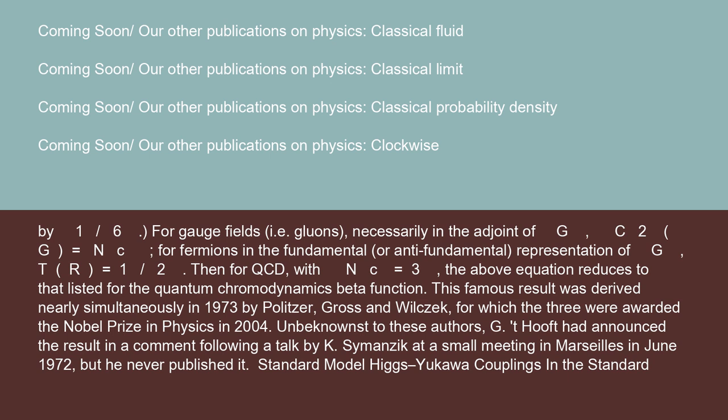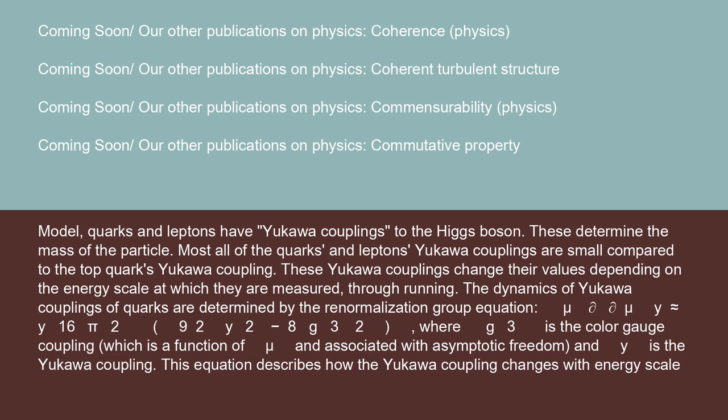Standard Model Higgs-Yukawa couplings: In the standard model, quarks and leptons have Yukawa couplings to the Higgs boson. These determine the mass of the particle. Most all of the quarks and leptons' Yukawa couplings are small compared to the top quark's Yukawa coupling. These Yukawa couplings change their values depending on the energy scale at which they are measured through running. The dynamics of Yukawa couplings of quarks are determined by the renormalization group equation.